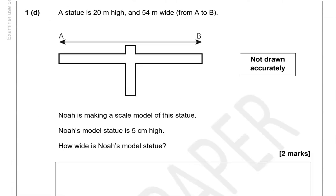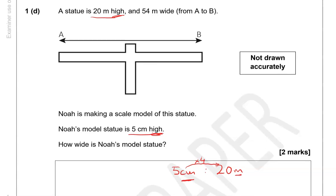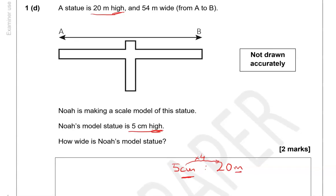A statue is 20 meters high and 54 meters wide from A to B. Noah is making a scale model of this statue. Noah's model statue is 5 centimeters high. How wide is Noah's model statue? So the model is 5 centimeters high, whereas the statue in reality is 20 meters high. So we're looking at height for both. To get from 5 to 20, we'll multiply it by 4. Without getting into the conversions, we shouldn't forget that this is centimeters and this is meters. So if we keep them the same for the width, we should be fine.